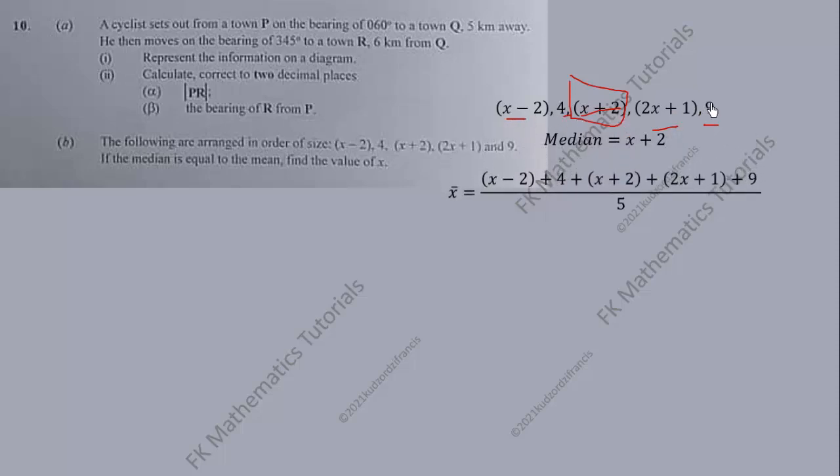Then the mean is the addition of all the data points divided by the number of items, which is five. Because they are equal, we equate these two equations. First, we need to simplify this. When you simplify this, you get 4x + 14, because we have x + x is 2x plus 2x is 4x, then this negative 2 and 2 cancel, we have 4 + 1 + 9 which is 14. So cross multiply, expand, then group like terms. Then x is equal to 4.